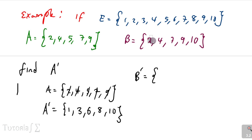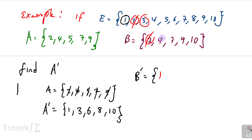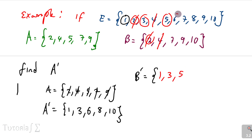The universal set has 1 — B does not have 1, so write 1. Universal set has 2 — B has 2, cancel. Universal set has 3 — B does not have 3, write 3. Universal set has 4 — B has 4, don't write it. Universal set has 5 — B does not have 5, write 5. Universal set has 6 — B does not have 6, write 6.